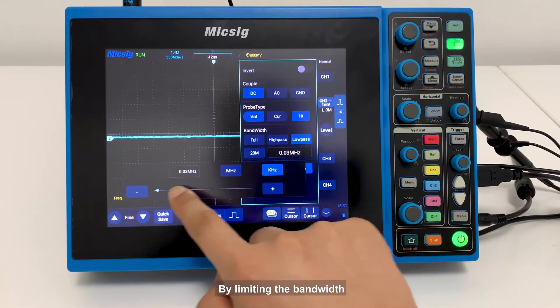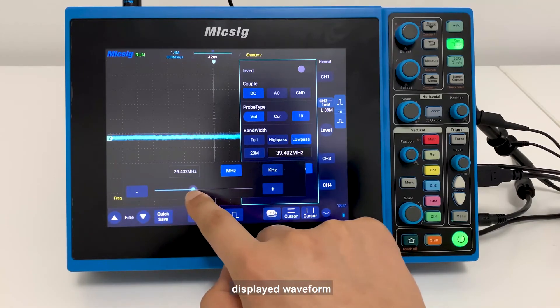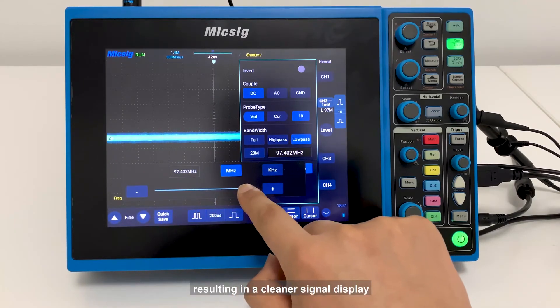By limiting the bandwidth, we reduce the noise that sometimes appears on the displayed waveform, resulting in a clear signal display.